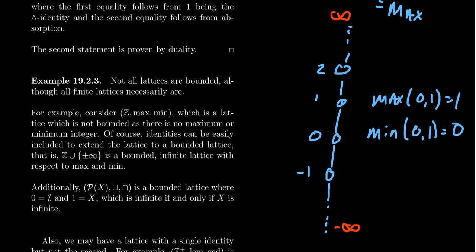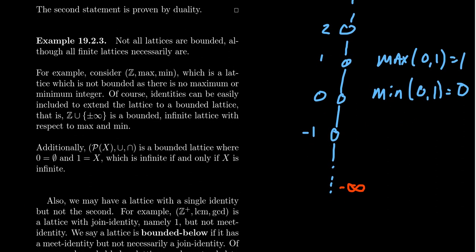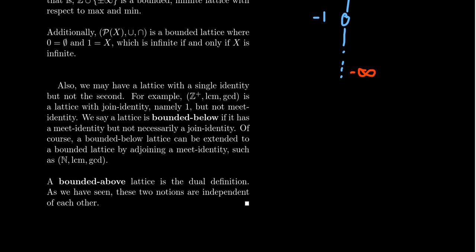Often we can assume lattices are bounded even when they're not, because of this type of construction. The lattice we were most interested in is the power set lattice with unions and intersections. This lattice is always bounded: the zero element coincides with the empty set, and the one element coincides with the whole set itself.